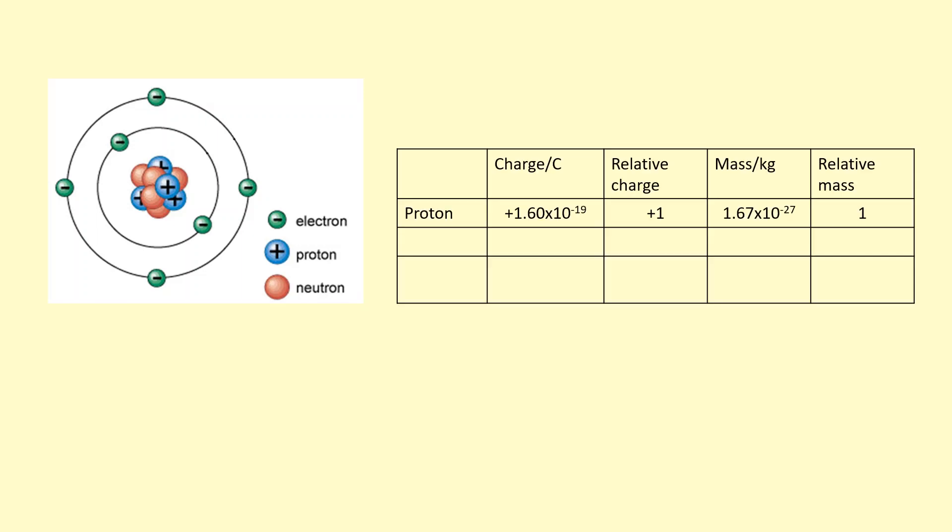Okay, so here's a model of the atom. Inside the atom, we've got subatomic particles like the proton and the neutron. These are what we call nucleons because they're found inside the nucleus of the atom.